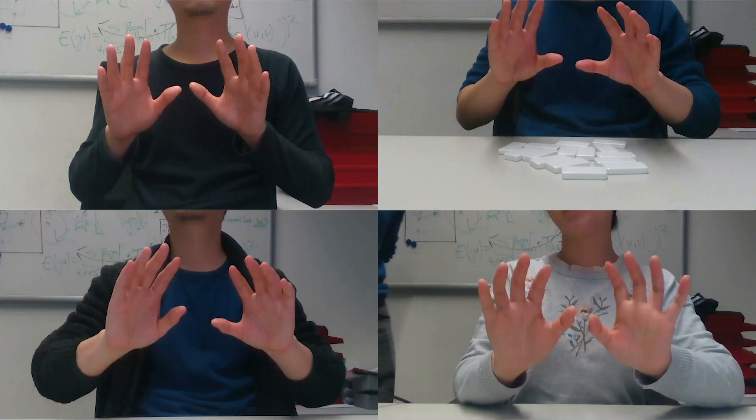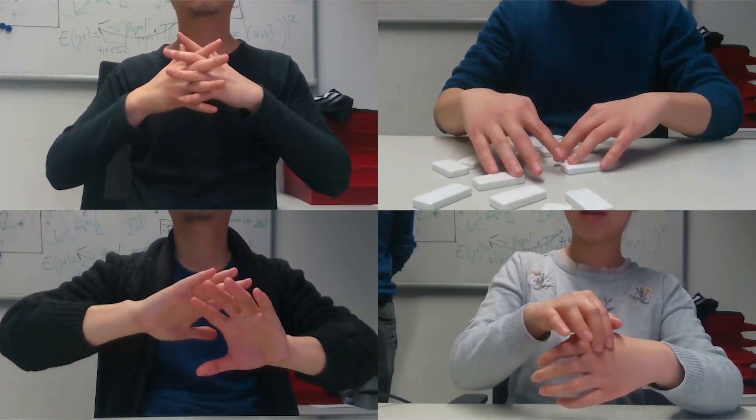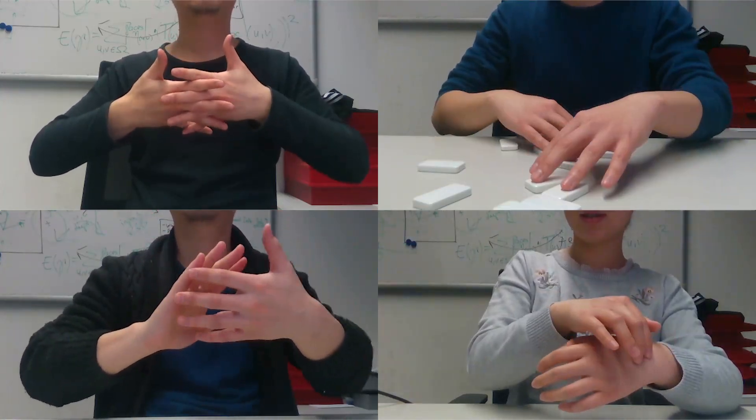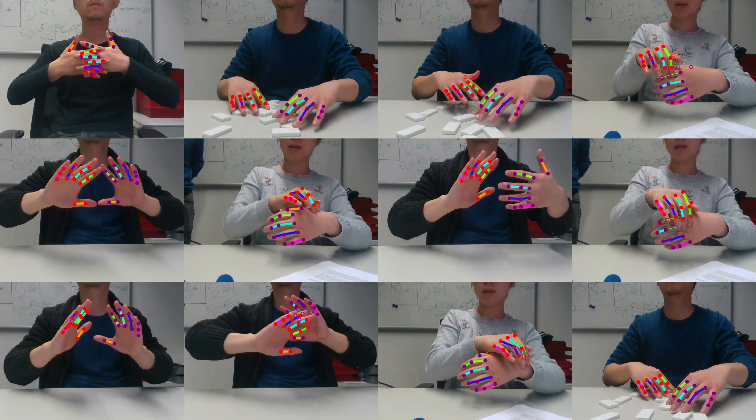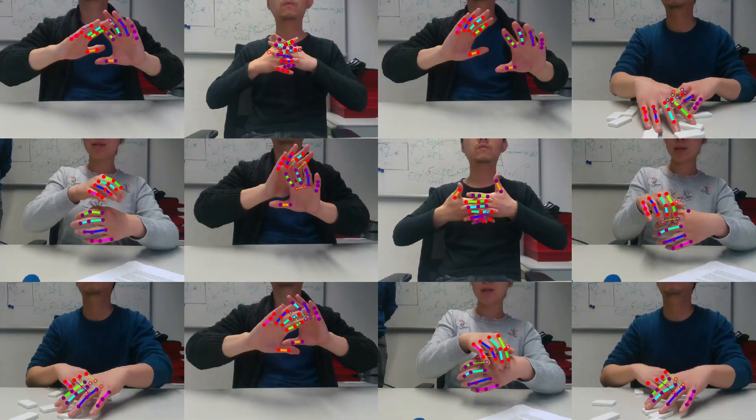To evaluate our approach, we created the new benchmark dataset RGB two-hands that exhibits significantly stronger hand interactions compared to previous benchmarks. We annotate 14 joints per hand on a subset of the images in the sequences.